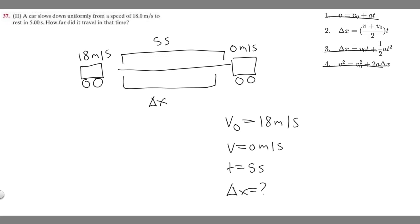you can see all the variables line up. We're given v, v₀, and t, so all we've got to do is solve now. Δx equals v, which is 0, plus v₀, which is 18,